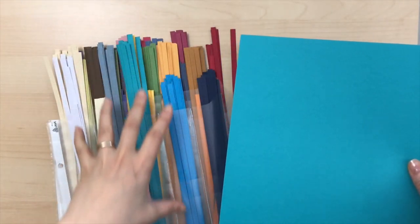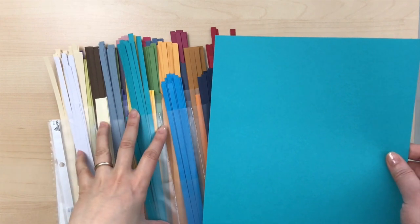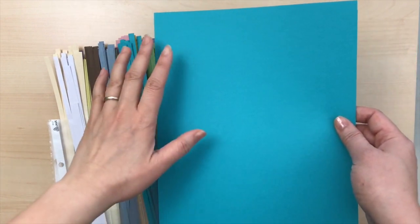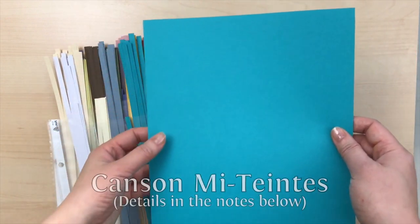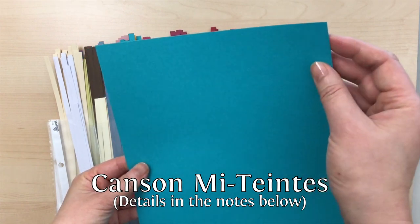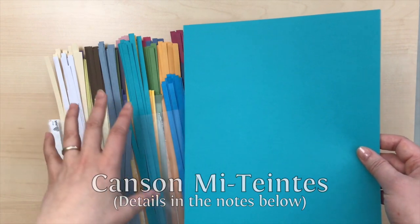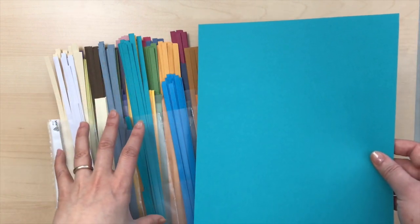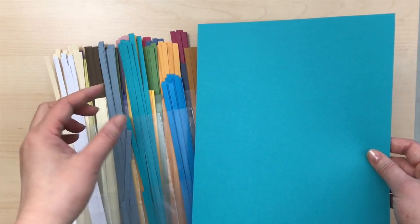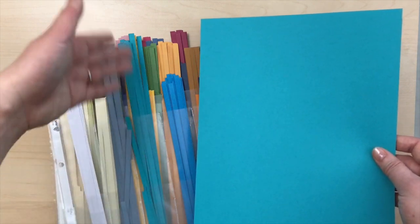Please note that the paper strips I have here I've cut myself from a sheet of eight and a half by eleven Canson Mi-Teintes paper. It's a little thicker than conventional quilling paper and only 11 inches, so this technique might not be suitable for conventional quilling strips which tend to be thinner and quite a lot longer.